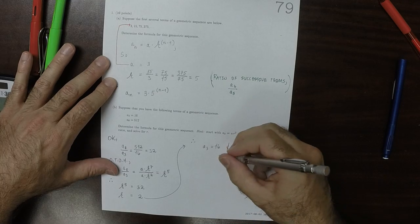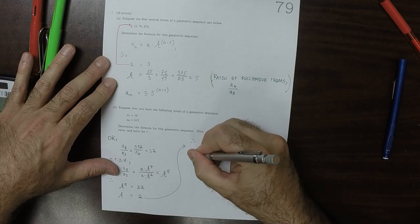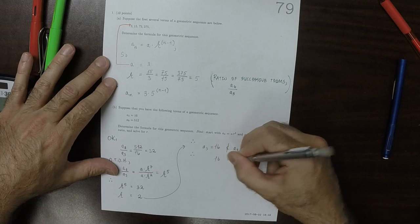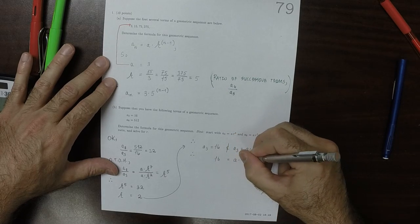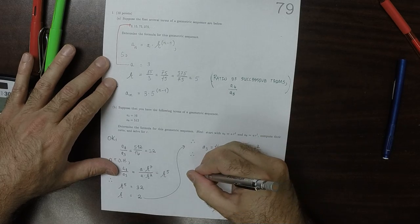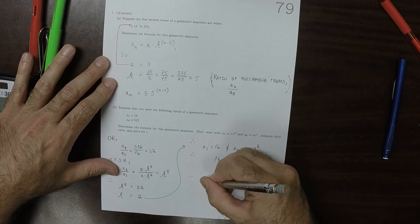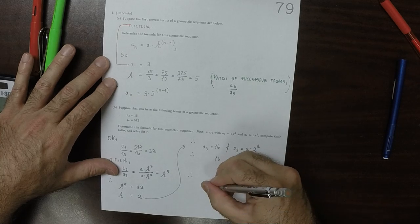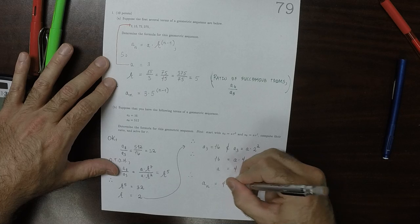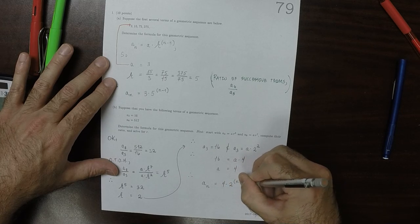That's telling us that 16 must be equal to a multiplied by 4. So a must be 4. And as a result, we now know the formula that a_n is 4 multiplied by 2 to exponent n minus 1.